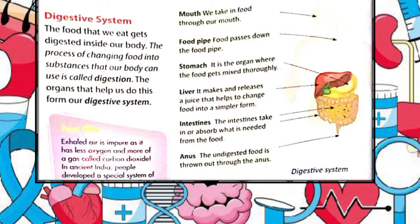The digestive system of the human body comprises a group of organs working together to convert food into energy for the body. Suppose you are sitting and eating a pizza sandwich; when you finish, you take a last drink of milk, wipe your mouth and head to your next class. In a few minutes you are thinking about the lesson, having completely forgotten about the food — but it is still in your stomach.